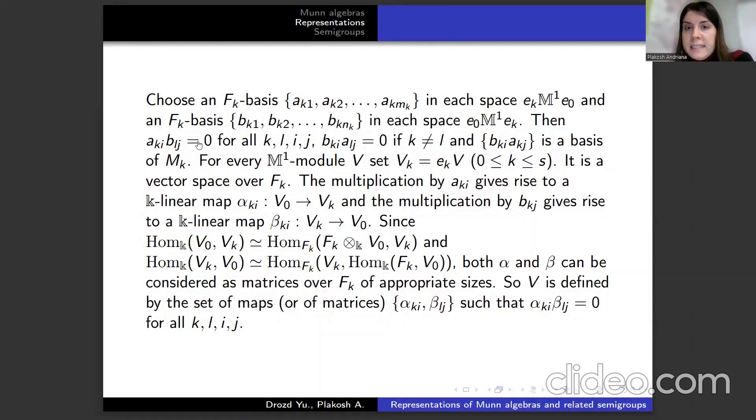Choose an Fₖ-basis in each space eₖ·M¹·e₀ and then Fₖ-basis in each space e₀·Mₖ·eₖ. Then we have elements from first, when we multiply by elements of second, we have 0 for all k, ℓ, i, j.